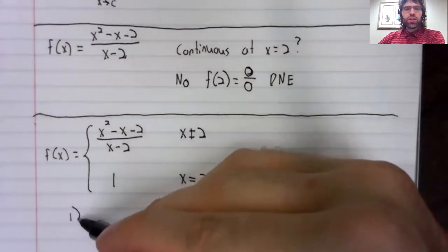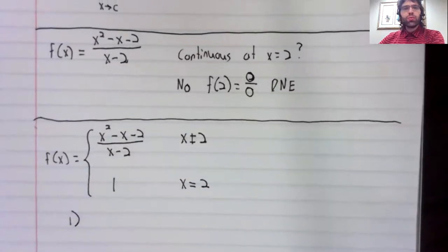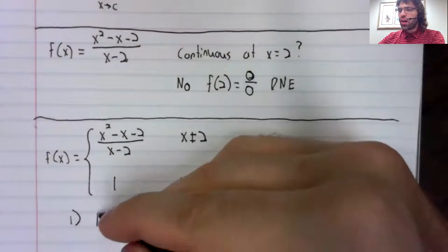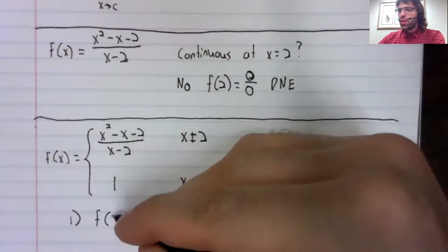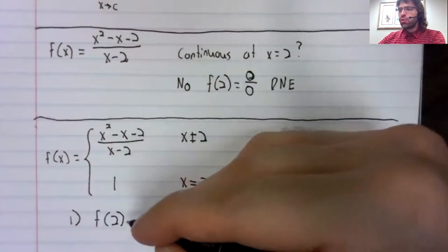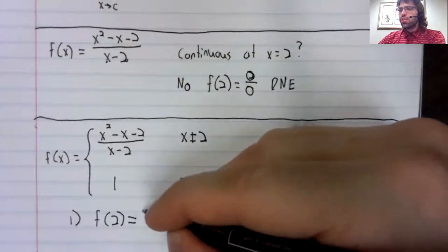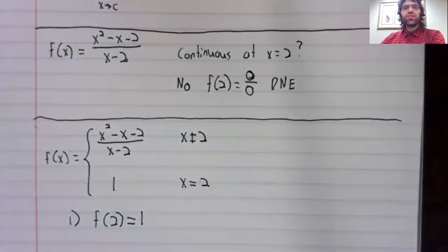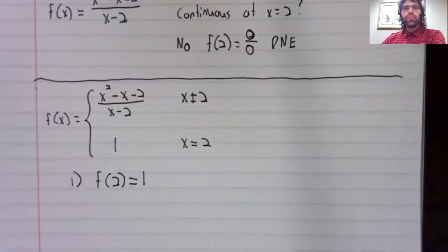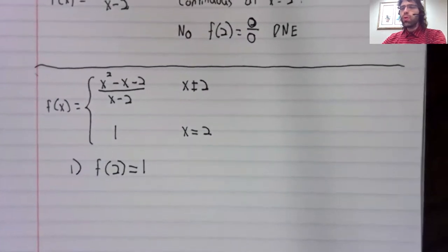And the first condition is now satisfied. f of two does exist now. It equals one.